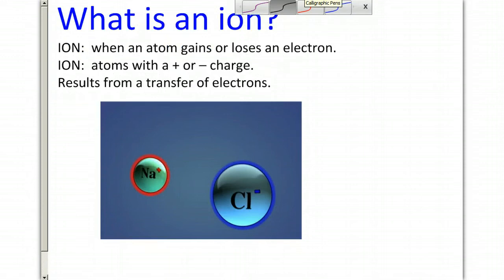What is an ion exactly? An ion is when an atom gains or loses an electron. Realize that gaining results in a negative charge and losing results in a positive charge. Anytime you have a transfer of electrons,